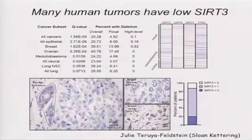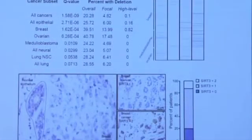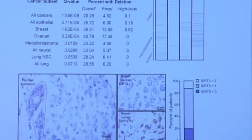Moreover, when we used the Tumorscape database to analyze SIRT3 copy number across human tumors, we saw something really striking: a large number of human tumors — about 20% in all — had a SIRT3 deletion. Strikingly, breast tumors and ovarian tumors had a 40% deletion of one copy of SIRT3, including a focal deletion. By IHC analysis in a blind study at Sloan Kettering, about 85% of human breast cancers showed reduced SIRT3 expression.